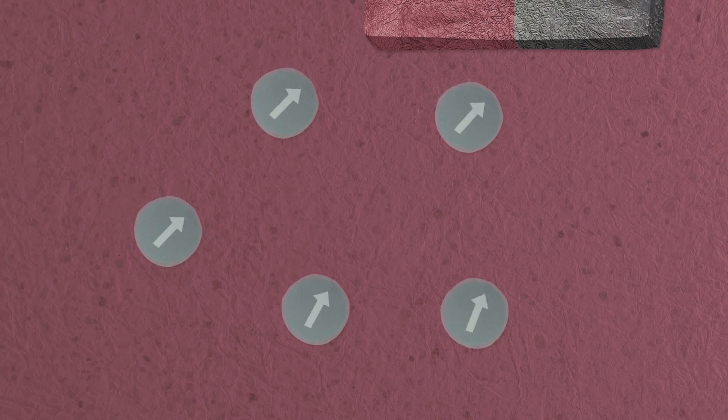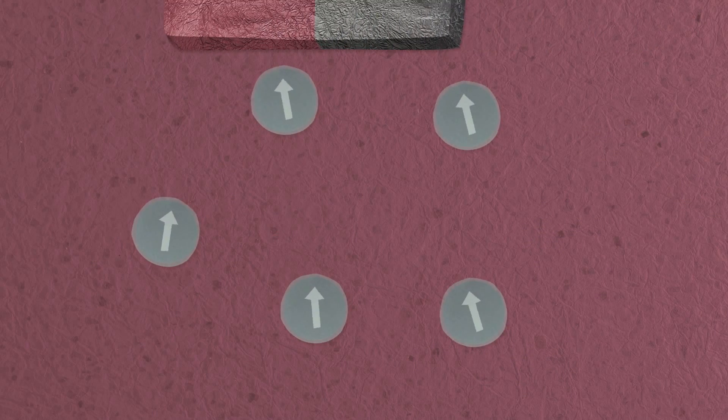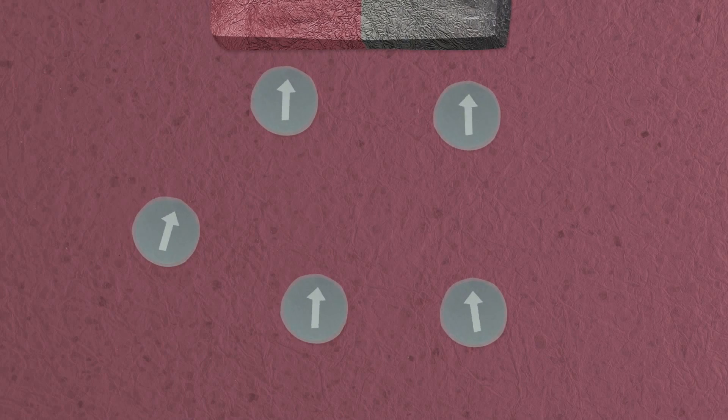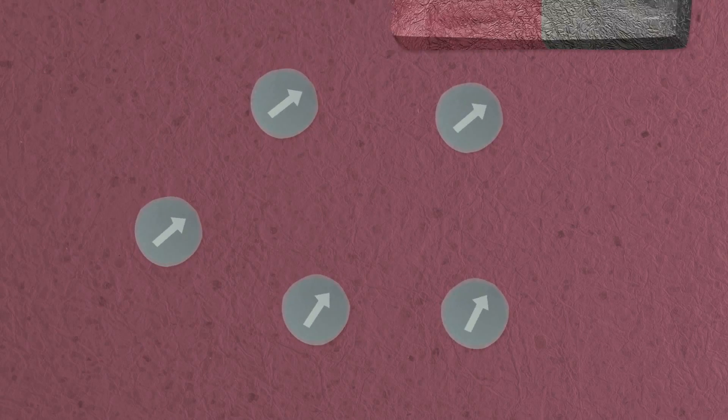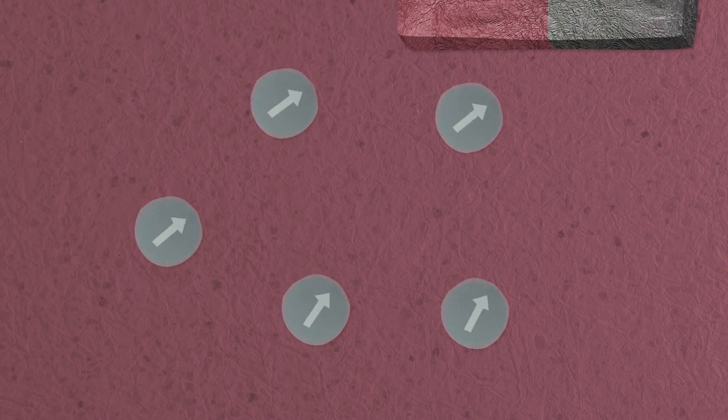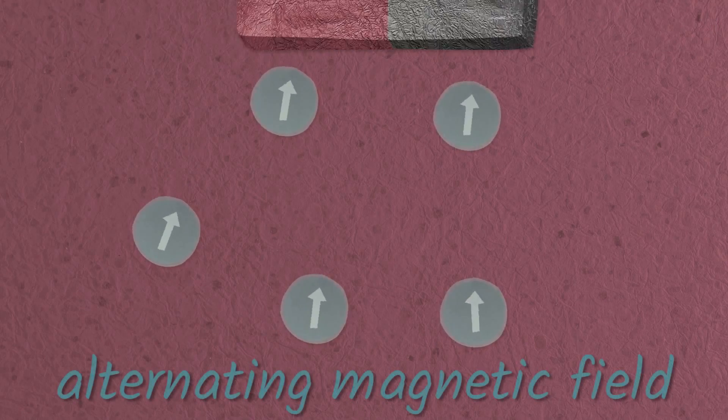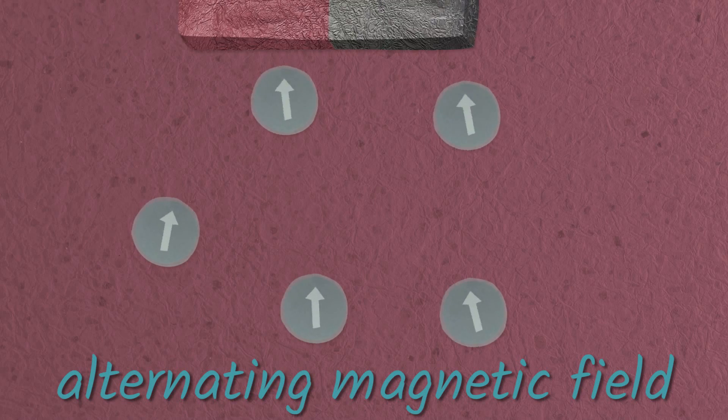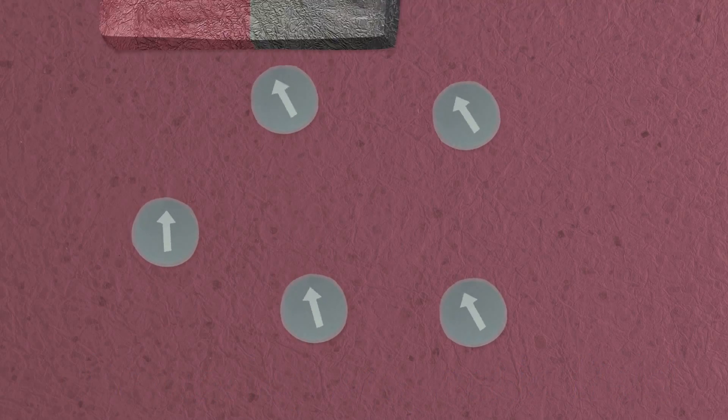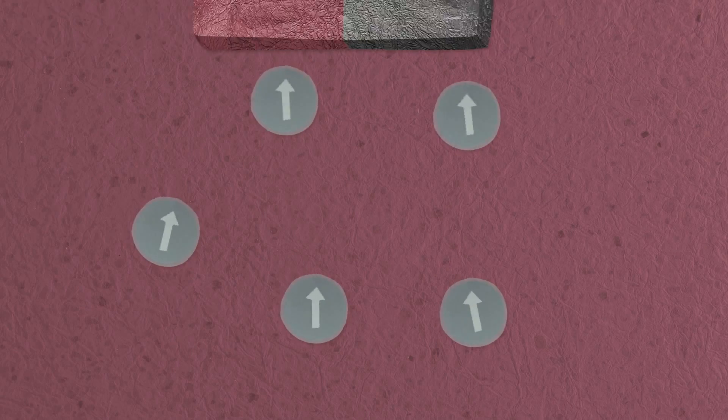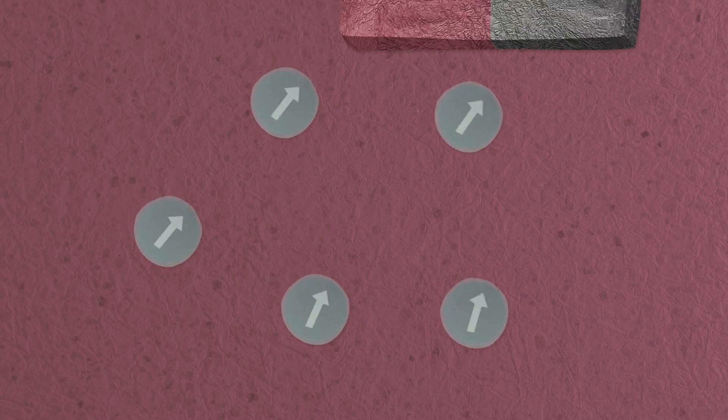If we put a magnet near the nanoparticles, they will line up with the magnet. If we want the nanoparticles to move, we can move the magnet, and the nanoparticles will follow. If we want the nanoparticles to move quickly, we can use an alternating magnetic field. The nanoparticles follow the magnetic field and move to always align with it. If the alternating magnetic field moves quickly, so will the nanoparticles.